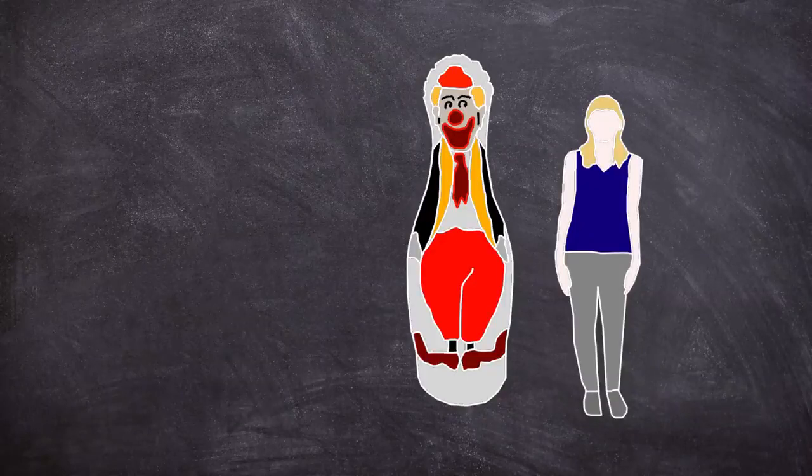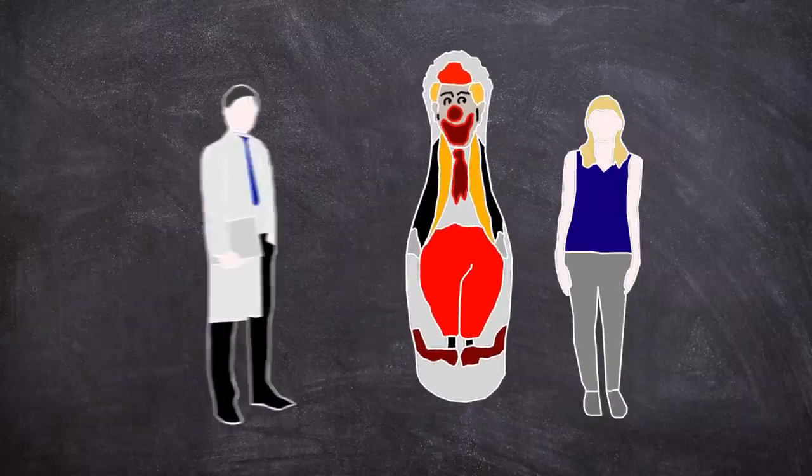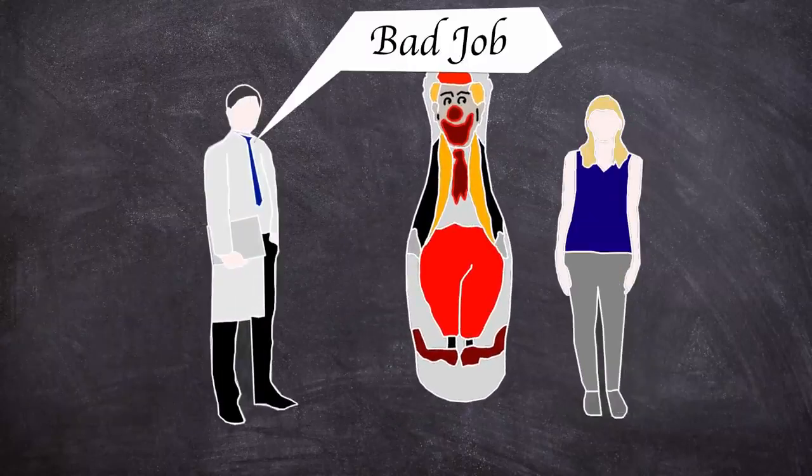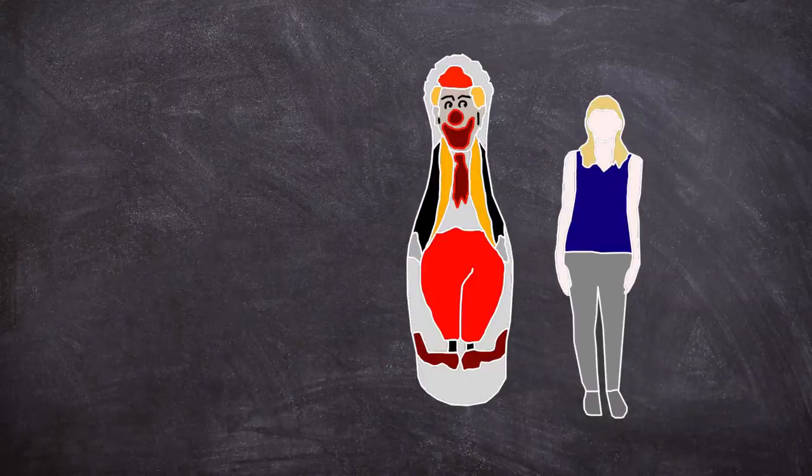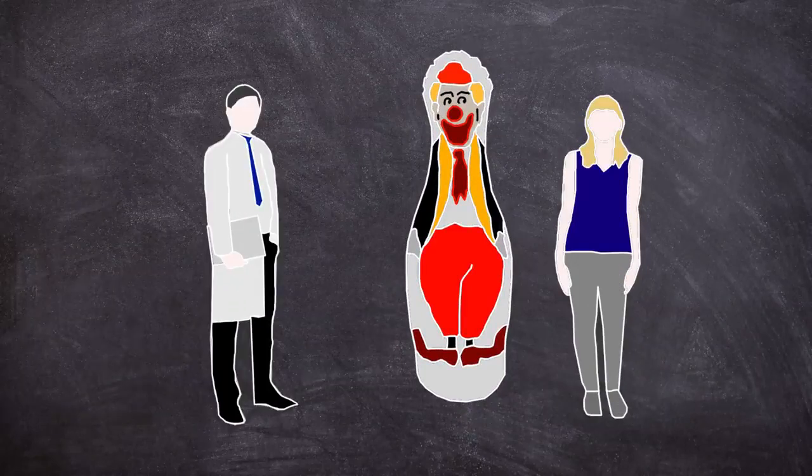The second group would witness the same scripted scenario of aggression behaviours, but instead the model received a reprimand and was hit with a rolled wooden golf club. The third group served as the control, and the model had no reward or punishment for the displayed behaviour.